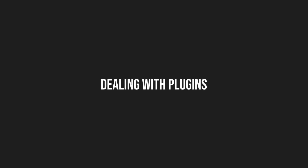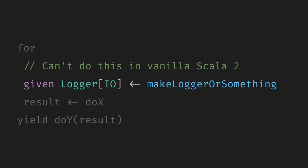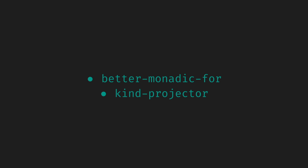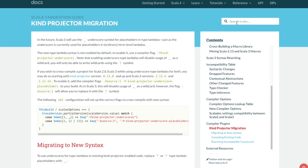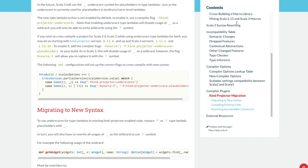Similar to dependencies, some plugins stay working and some are redundant and can be dropped. For instance, the first one I was happy to retire was Better Monadic For, because Scala 3 already gives me better for-comprehensions — for example, we can bind implicits that we couldn't do with vanilla Scala 2. The second one is Kind Projector. Scala 3 has built-in type lambda syntax and Kind Projector-compatible syntax. For more information, see the Kind Projector migration guide.